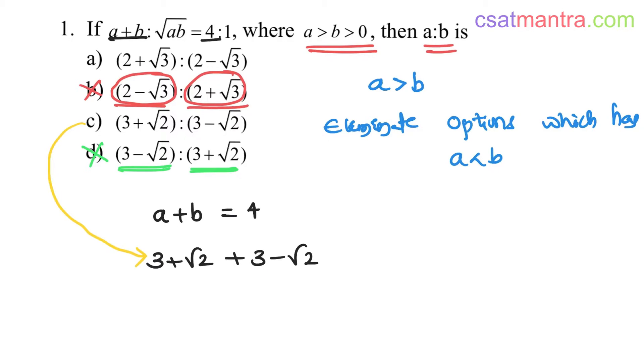3 plus root 2 plus 3 minus root 2, which is 6, right? Root 2, root 2 cancels out. So option C is eliminated.